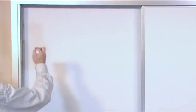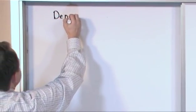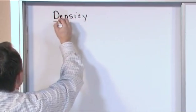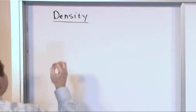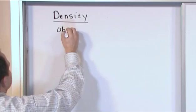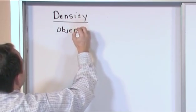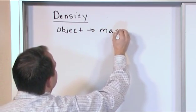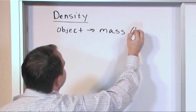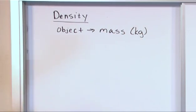So let's go ahead and put some numbers to it to make sure you understand. We're talking about the topic of density. Objects have a mass — you can measure it in grams or kilograms.